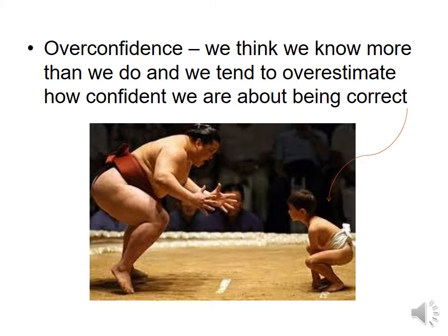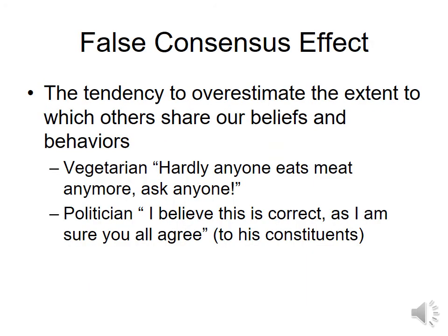Overconfidence can also lead to something called the false consensus effect. The false consensus effect is a tendency to overestimate the extent to which others share our beliefs and behaviors. You might find this when someone in class professes, 'The entire class agrees with me,' and you think to yourself, 'I don't agree with you — I've never shared a thought with you.' But that person probably sits surrounded by like-minded people who confirm what they think, and so they assume it ripples further outward and everyone agrees with them.